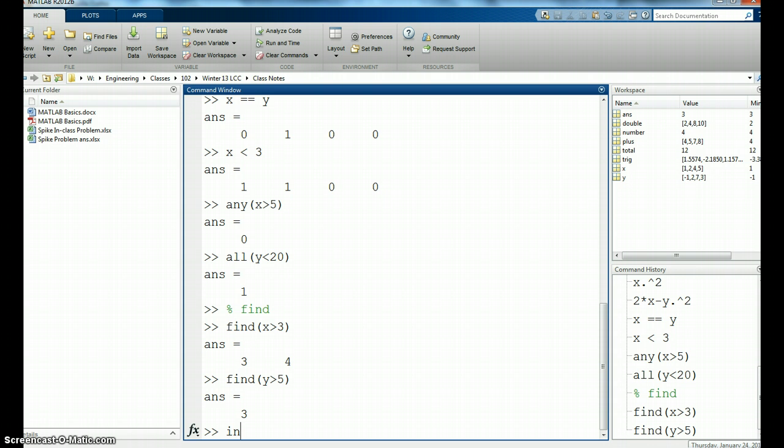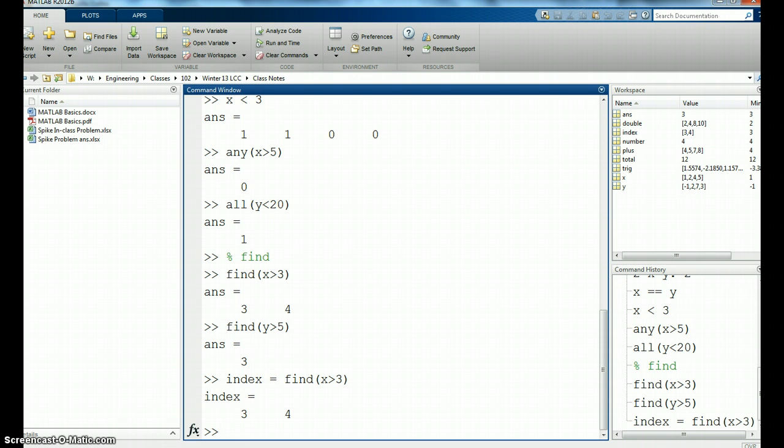The nice part about this is I'm going to call it index. Index equals find x greater than 3. So now I have a variable that happens to be called index and it's 3 and 4. It says the location where it's greater than 3 is in location 3 and location 4. But I'd like to know what's there. What are the values?